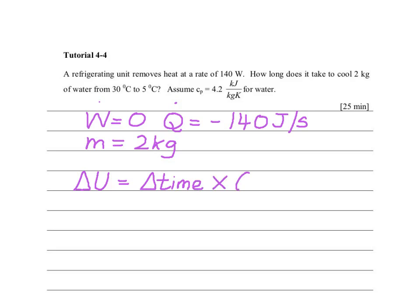Multiplied by the heat transfer rate. We now expand delta U to be M C P times capital T2 minus capital T1, the change in temperature, which is equal to the time taken, multiplied by the heat transfer rate.